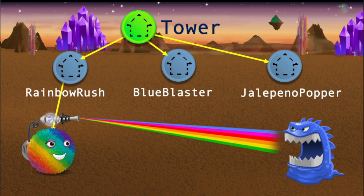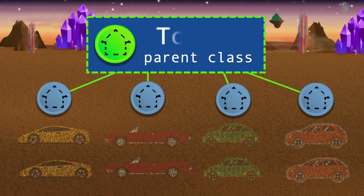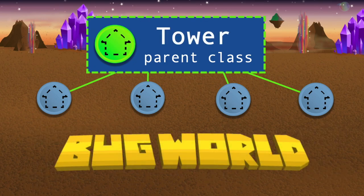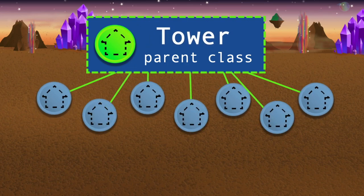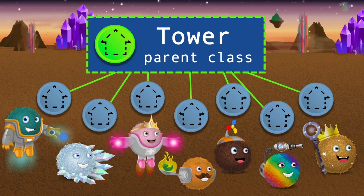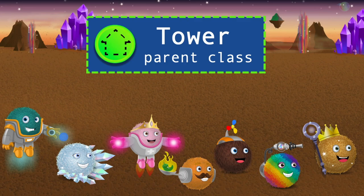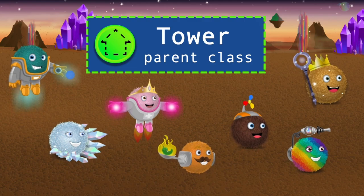Remember our earlier example from Bug World? The car class we've been talking about works the same way as the tower class in Bug World. Similar to the car class, there isn't just one thing called a tower. Bug World has many different subclasses of tower — objects created from each subclass look and behave differently, and are responsible for different things. In the end, they all work together to defend against the slimes.